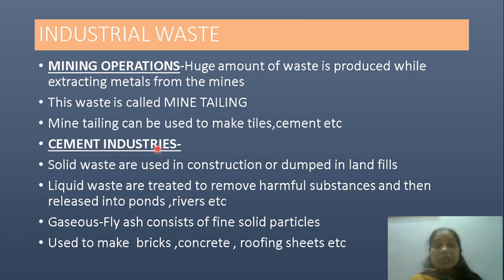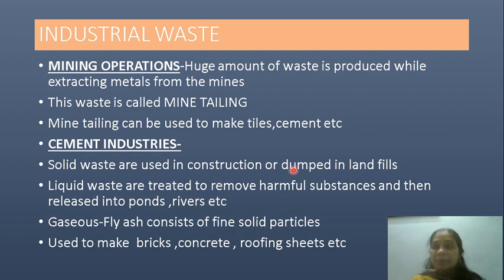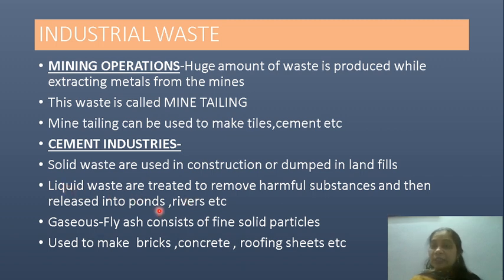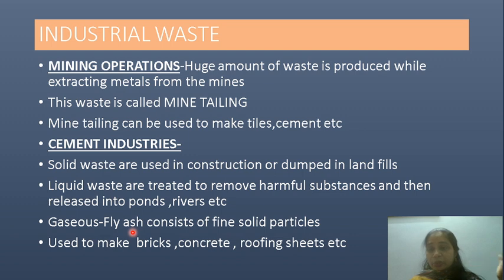From cement industries, there can be solid waste, liquid waste, and gaseous waste. Solid waste is dumped in landfills — where they dig a hole in the ground, put all the waste in, and cover it up. Liquid waste is treated to remove harmful substances and then released into ponds and rivers. Gaseous waste is called fly ash, which contains fine solid particles thrown into the air. This fly ash can be purified and used to make bricks, concrete, roofing sheets, etc.